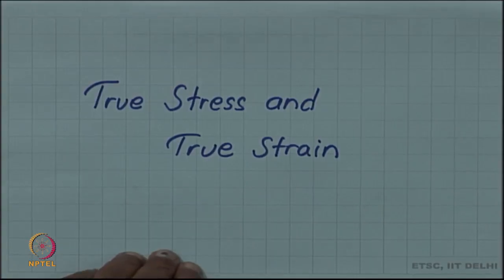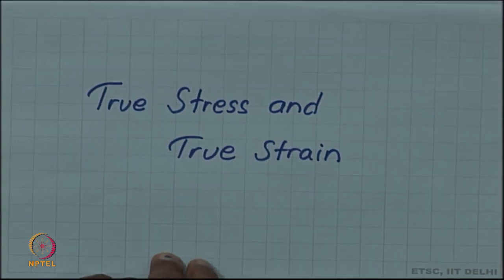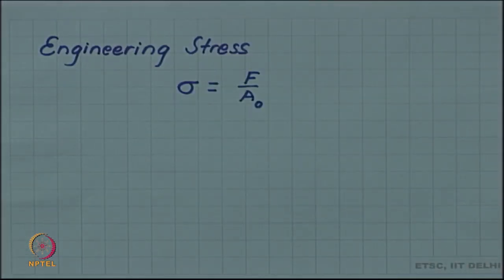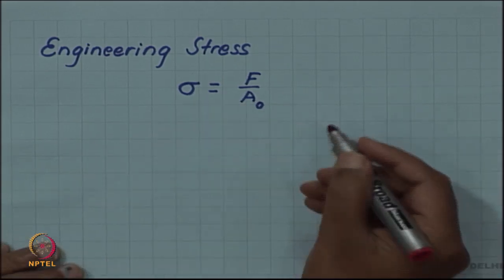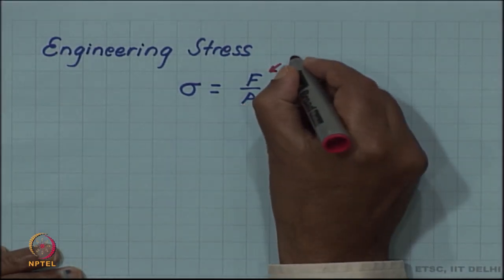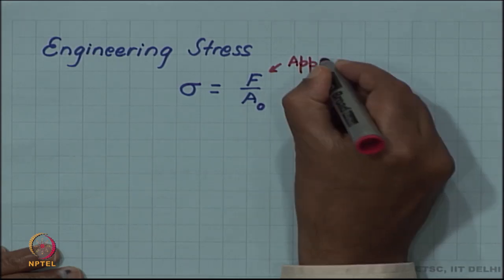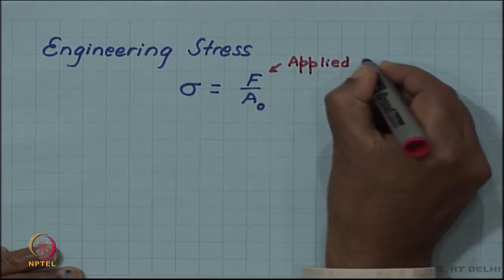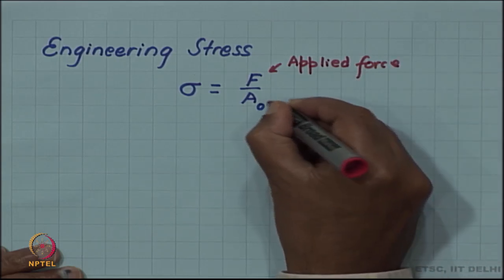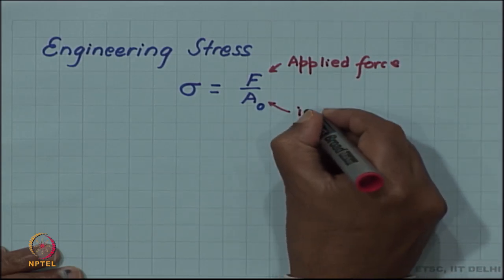We will discuss true stress and true strain. We have already discussed stress and strain, but those were engineering stresses and engineering strain. When we define engineering stress, that was defined as F by A naught, where F was the applied force and A naught was the initial cross sectional area.